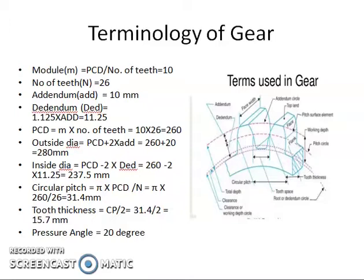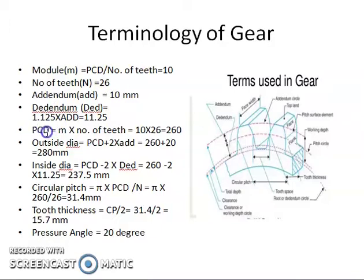Dedendum is the distance between the pitch circle to the bottom of the tooth in the radial direction. Dedendum is 1.125 times addendum, that is 11.25 mm. The pitch circle diameter — since module equals pitch circle diameter divided by number of teeth — we can find the pitch circle diameter as module into number of teeth, so 10 into 26 equals 260 mm.